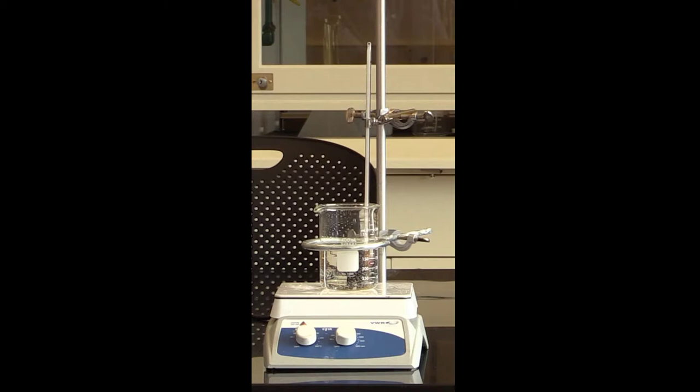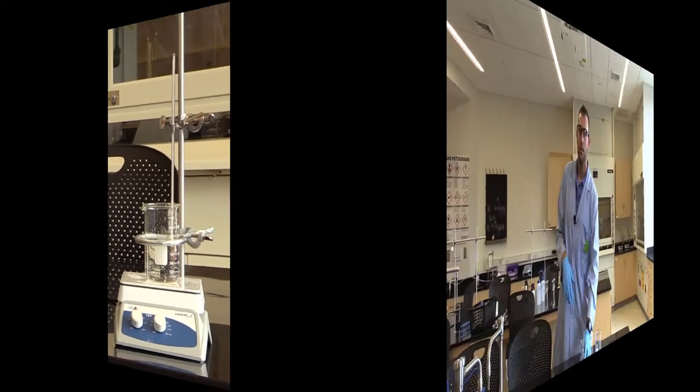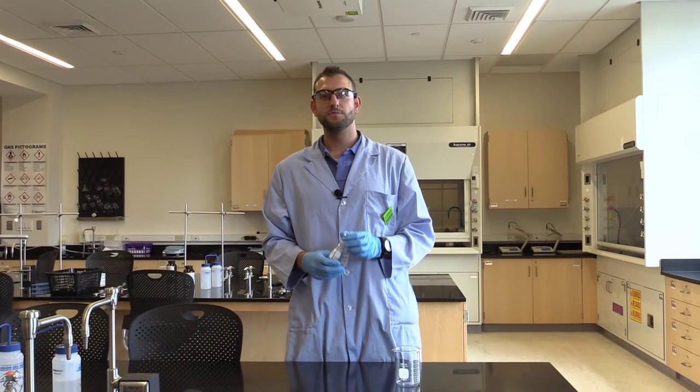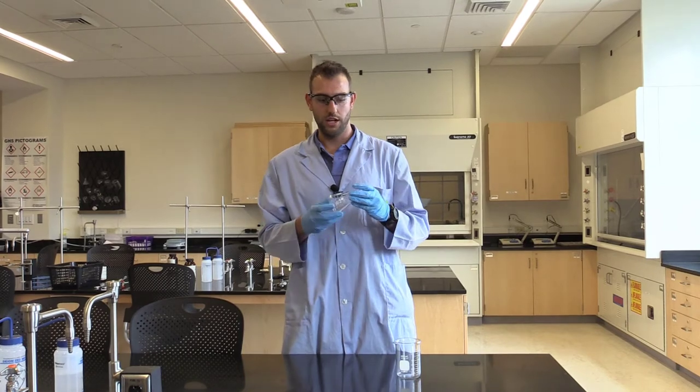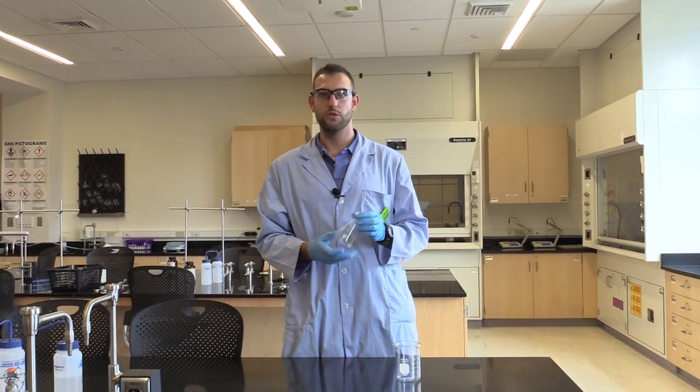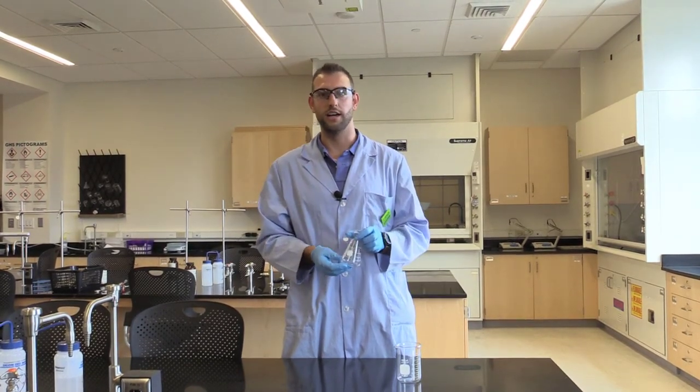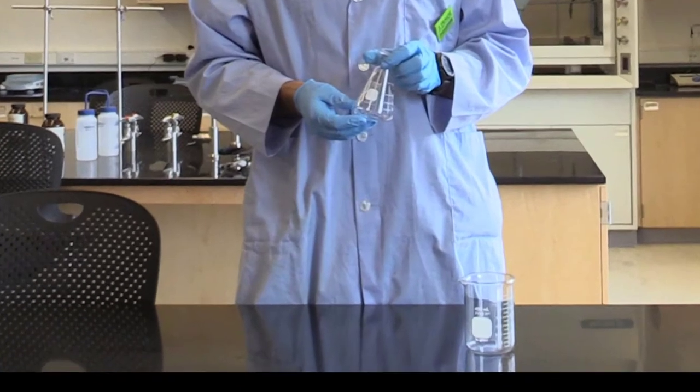While this is heating up, we'll set up our reaction vessel. We want to make sure we're using a dry 125 mL Erlenmeyer flask. The reason we need to make sure it's dry is because the chemicals we're putting in it will react with water. If there's any water in here, we're not going to get a good yield.